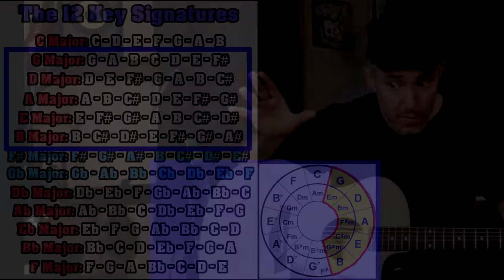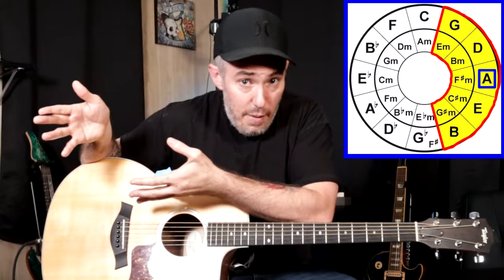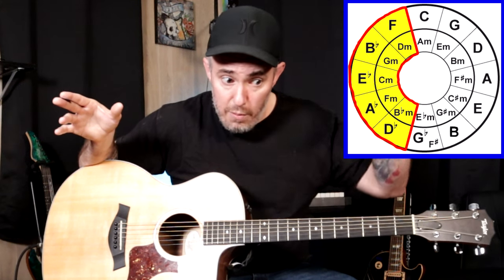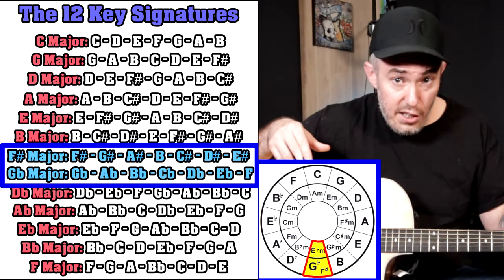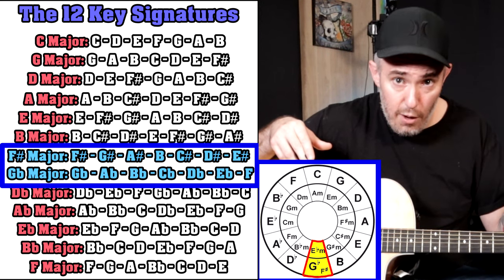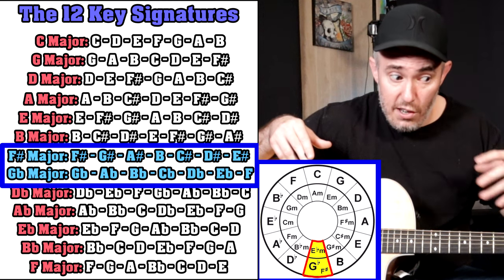Let's talk about sharps and flats. Everything on the right side of the circle is a key that uses sharps; everything on the left side uses flats. So A major, B major, F sharp minor, and B minor all have sharps. The flat keys are on the left side. At the very bottom, the key can be considered either F sharp or G flat — they're the same thing. If you call it F sharp, it uses six sharps; if you write it as G flat, it contains six flats.